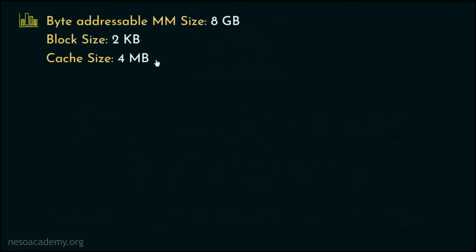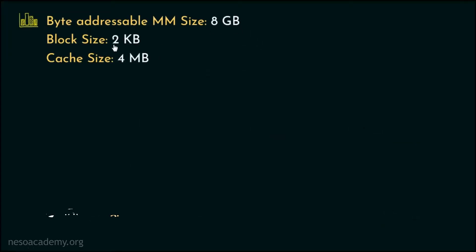Suppose we are provided with some data: there is a main memory of size 8GB, the block size is specified as 2KB, and a cache is given of size 4MB. Now since the memory is byte addressable, we need to change all the units into their respective bytes.